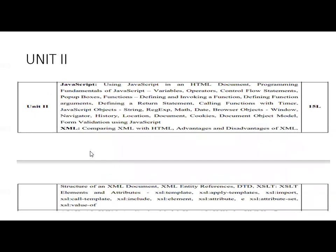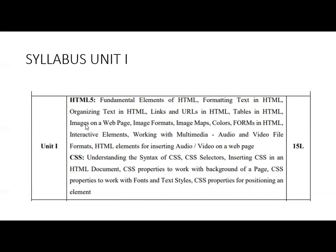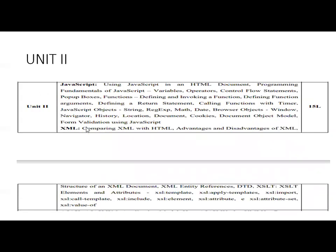The first unit covers HTML and CSS. In the second unit we are going to learn about JavaScript and XML — also key things in web designing. JavaScript is a scripting language. Topics include JavaScript in HTML documents, programming fundamentals, variables, operators, control flow statements, pop-up boxes, functions, arguments, return statements, calling functions with timers, JavaScript objects, strings, regular expressions, math object, date object, browser object, window, navigator, history, location, document, cookies, document object model, and form validation using JavaScript.